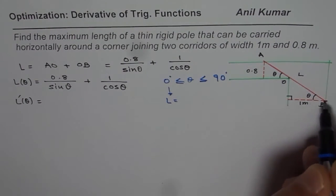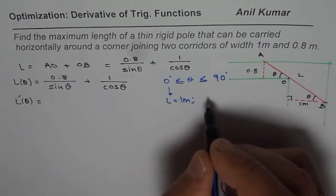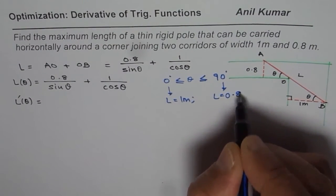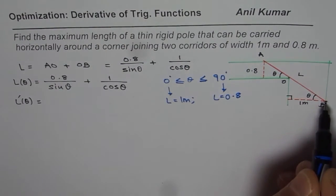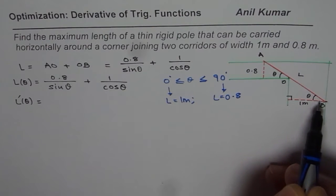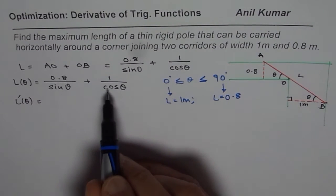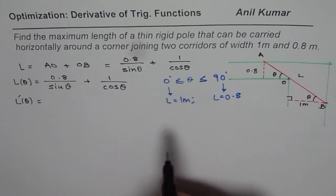So it is 1 meter. And for 90 degrees, the length will be equals to 0.8 meters. So those are the lengths for these boundary conditions. If theta is 0 degrees, the maximum length will be 1 meter, and if this angle is 90 degrees, the maximum length will be 0.8 meters. So we will analyze the critical value — if it is more than these, then we will have a maximum in between.